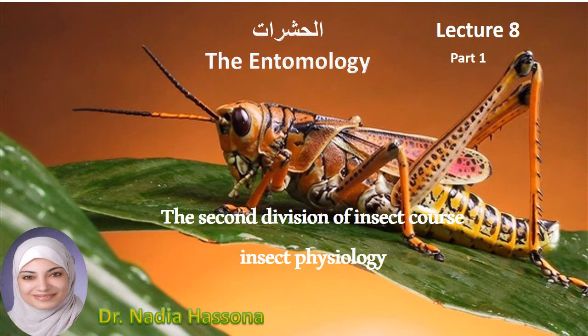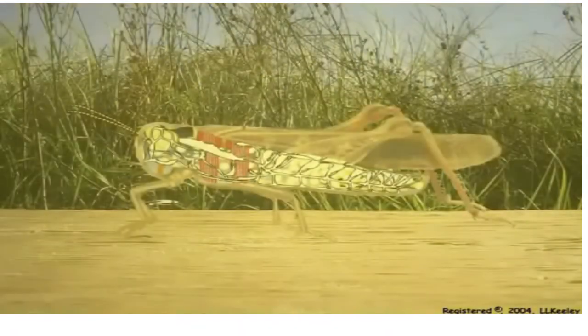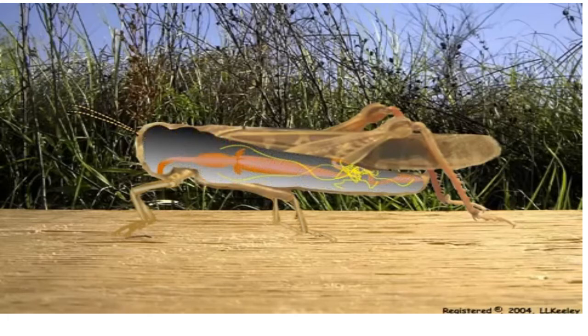Although all insects have common structures in their digestive systems, these structures can be highly variable between species based on the diversity of foods that insects eat. We will use the grasshopper to illustrate the basic principles for these common structures.